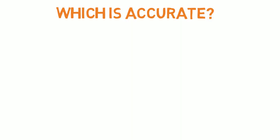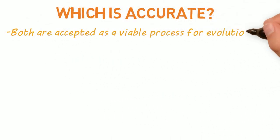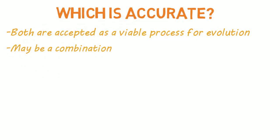So which one is accurate? Which one is the one that scientists and scholars use between gradualism and punctuated equilibrium? Well, they're actually both accepted as a viable process of evolution, and it may even be a combination of both which occurs, and which is probably most likely.